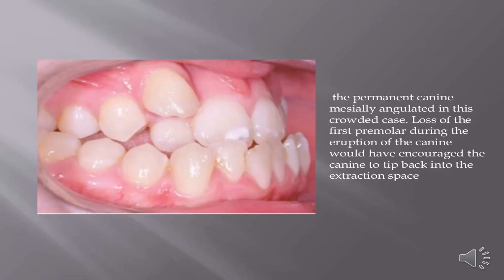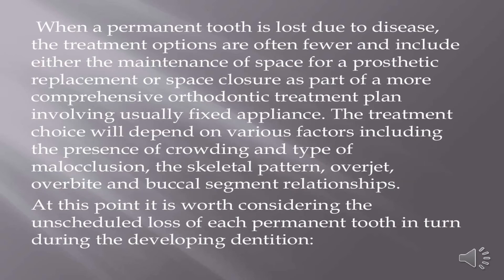The permanent canine may be mesially angulated in a crowded case. Loss of the first premolar during eruption of the canine would encourage the canine to tip back into the extraction space. When a permanent tooth is lost due to disease, treatment options include maintenance of space for prosthetic replacement or space closure as part of comprehensive orthodontic treatment, usually with fixed appliances. The treatment choice depends on the presence of crowding, type of malocclusion, skeletal pattern, overjet, overbite, and buccal segment relationships.